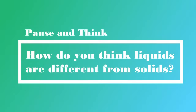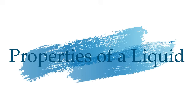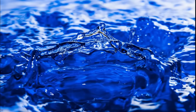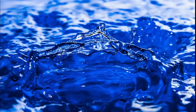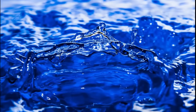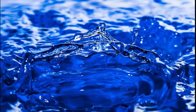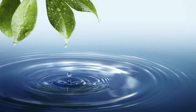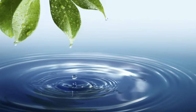How do you think liquids are different from solids? A liquid is a matter that does not have definite shape and size, but it has a definite volume. They are among the properties that distinguish liquids from other states of matter. Unlike solids, a liquid does not have a specific size or shape, and it only takes the shape of the container in which it is placed.